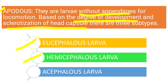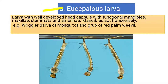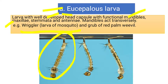Apodus larvae are of three types: eucephalus, hemicephalus, and acephalus. In eucephalus, as the name suggests, 'eu' means true — the head is well developed, with functional mandibles, maxillae, mouthparts, and antennae. The most important example is the larva of the mosquito; also, grubs of some weevils fall under eucephalus larvae. The head is prominently developed as an adaptation for feeding.